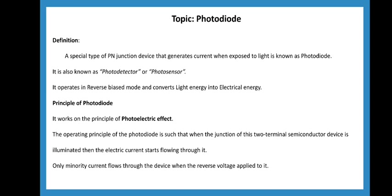A PN junction device generates current when exposed to light. This is called a photo detector or photo sensor. Photo diode is operated in reverse bias condition, whereas LED is in forward bias condition — that is totally different. Photodiode is in reverse bias condition.